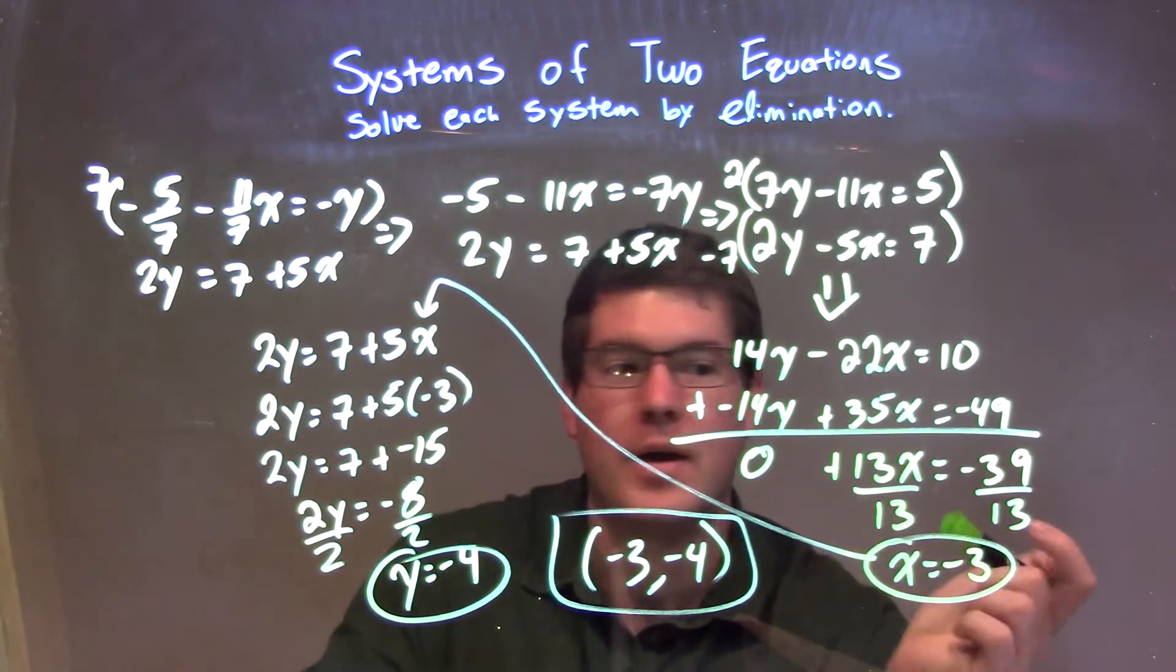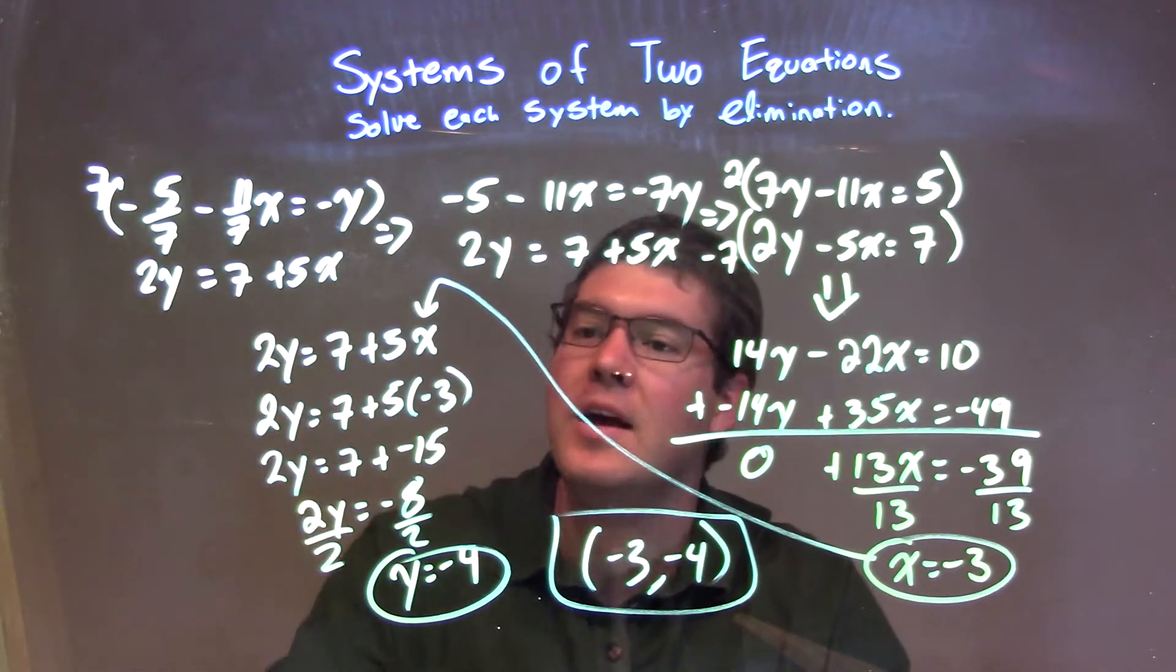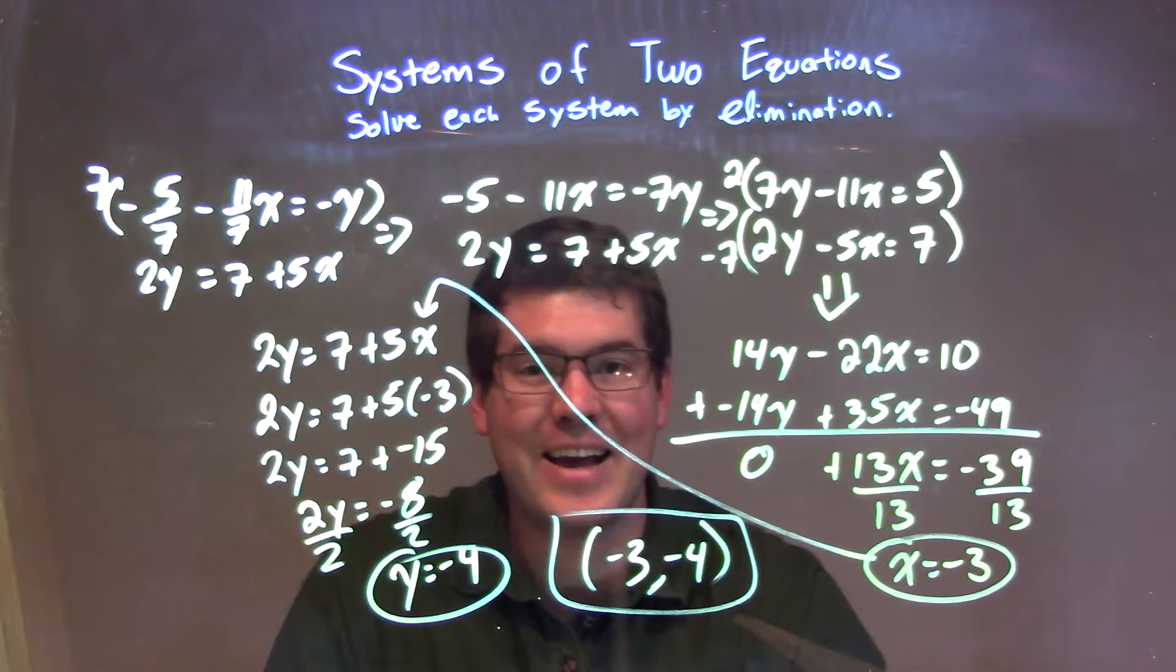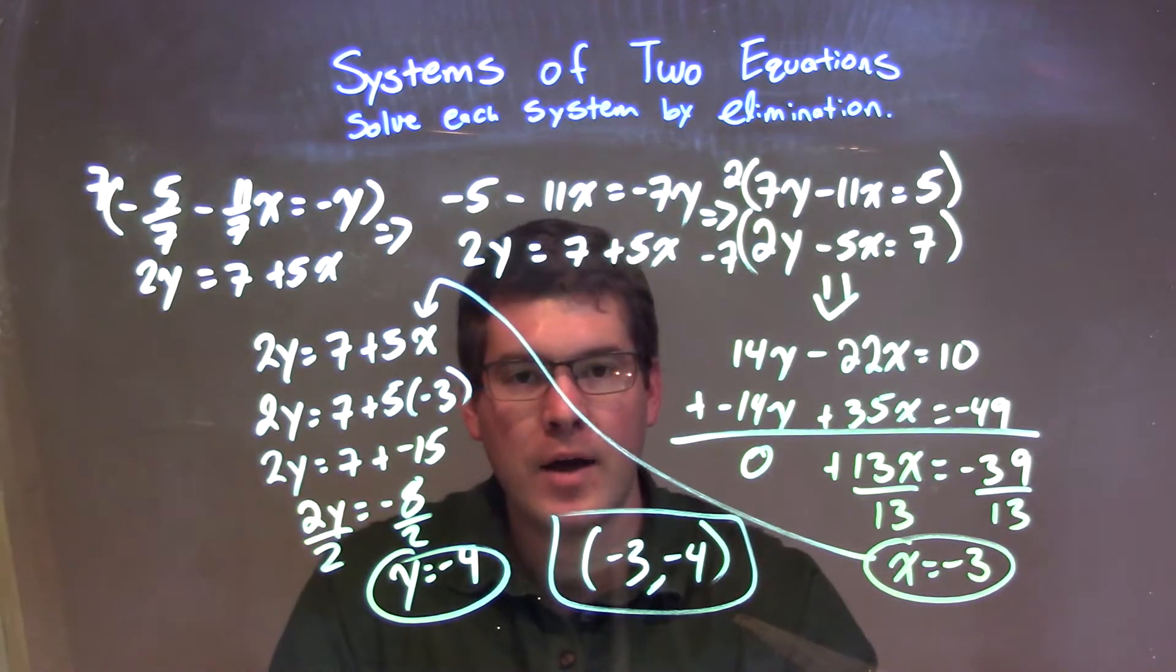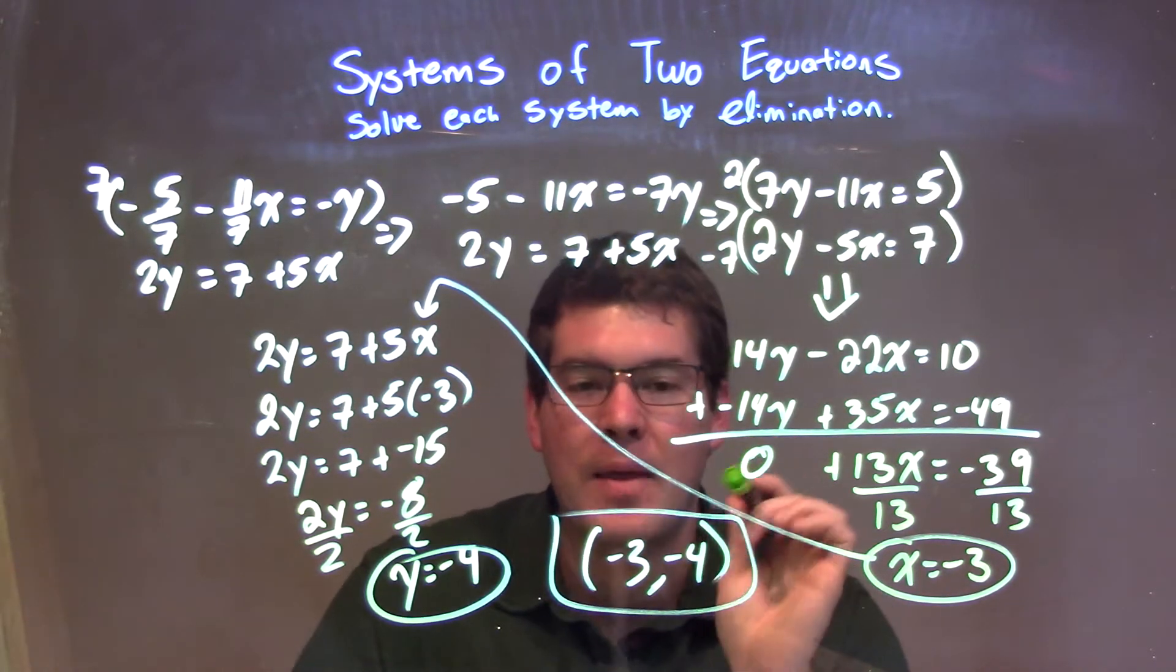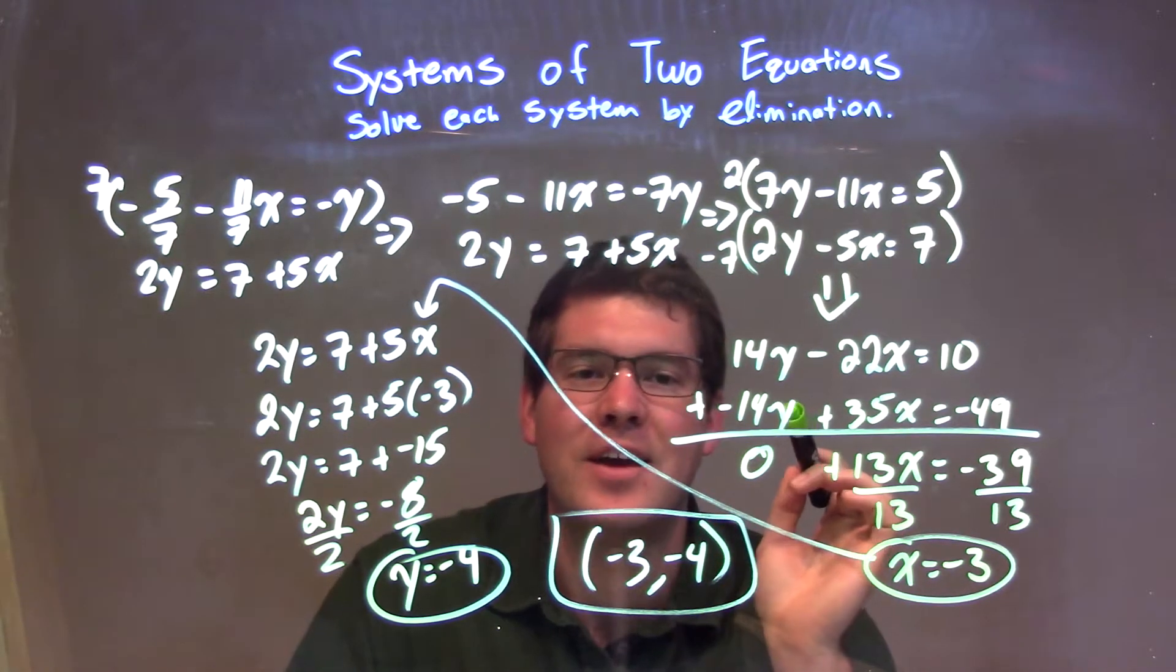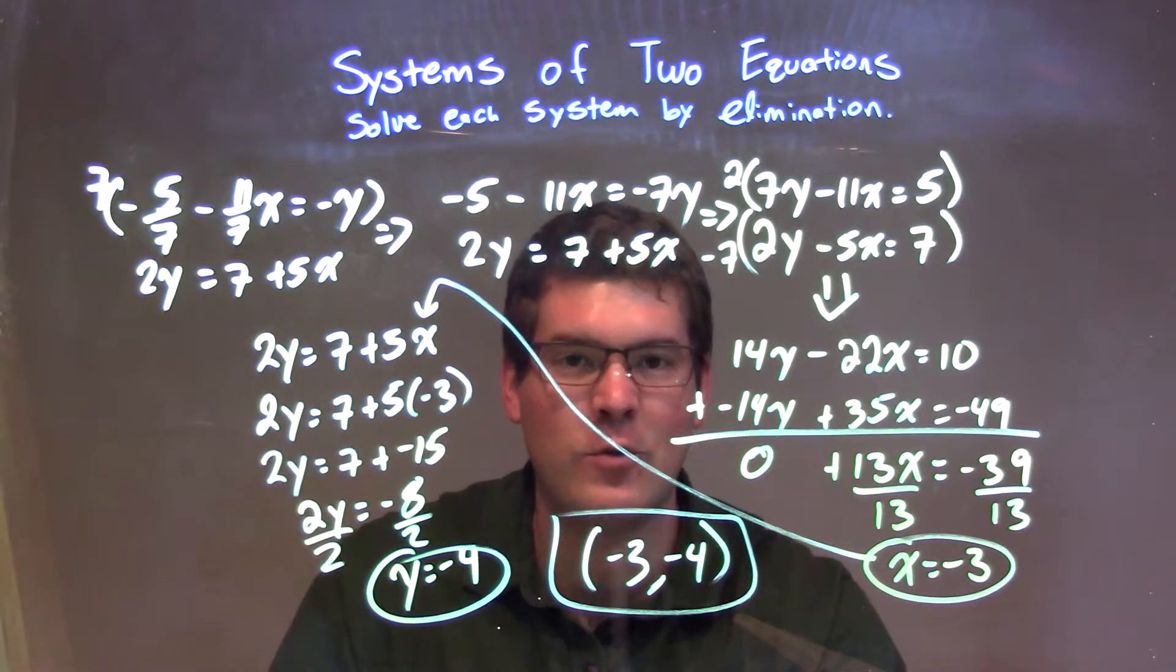From there, I plugged that negative 3 back into my second equation because I thought it was easier, and simplified. In doing so, I got y to be negative 4, or solved for y to be negative 4. I have my x and y value. I can combine them together to make one coordinate point. And that's our answer: the solution to the system of equations using elimination, which is negative 3 comma negative 4.